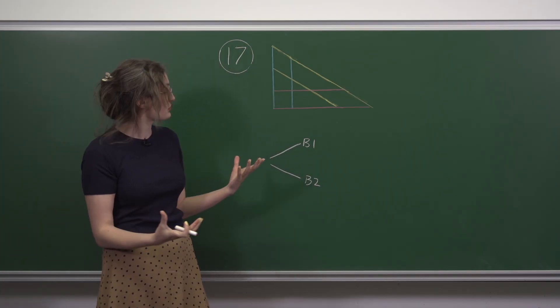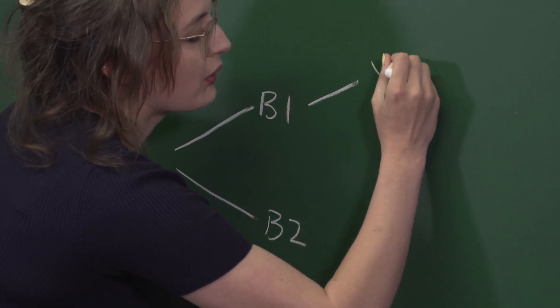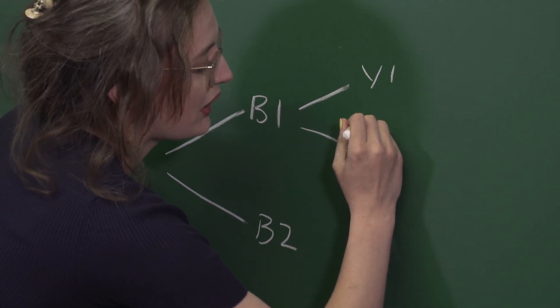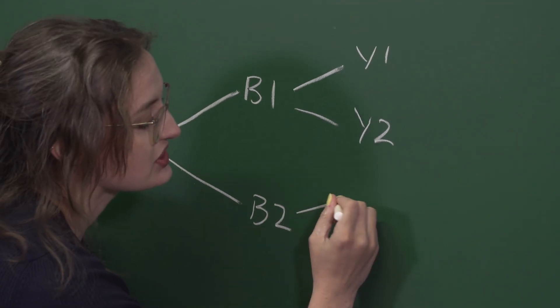Then we have two options of which yellow line to pick: Y1 and Y2. And it doesn't matter which blue line we picked to start with, so we've got the same options here.